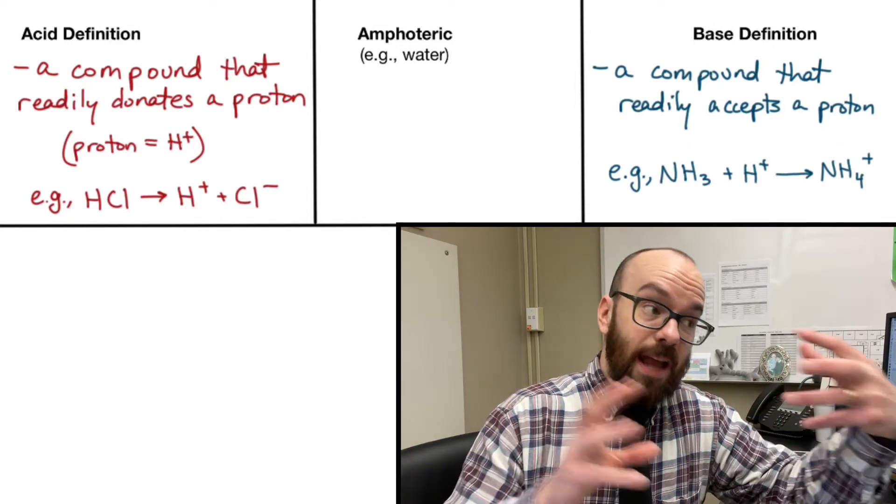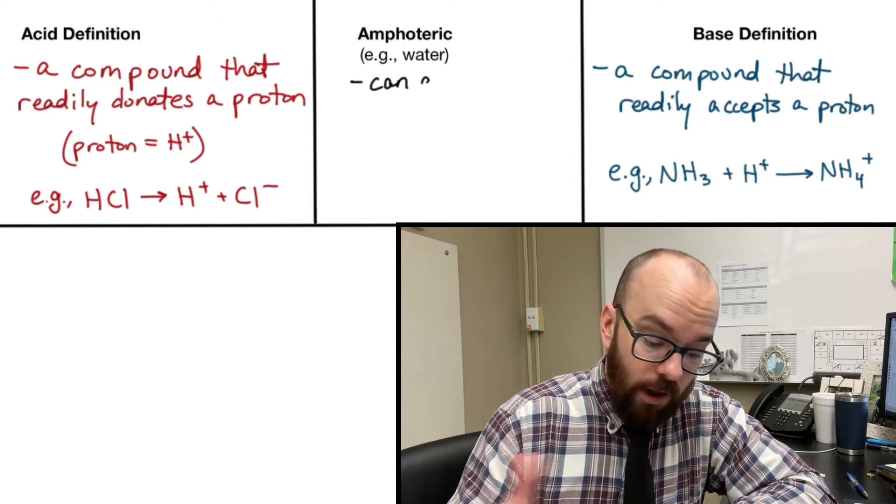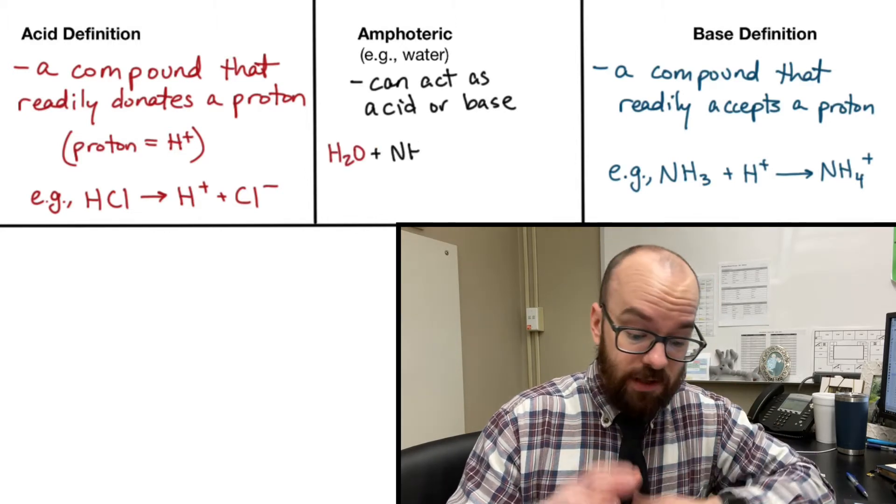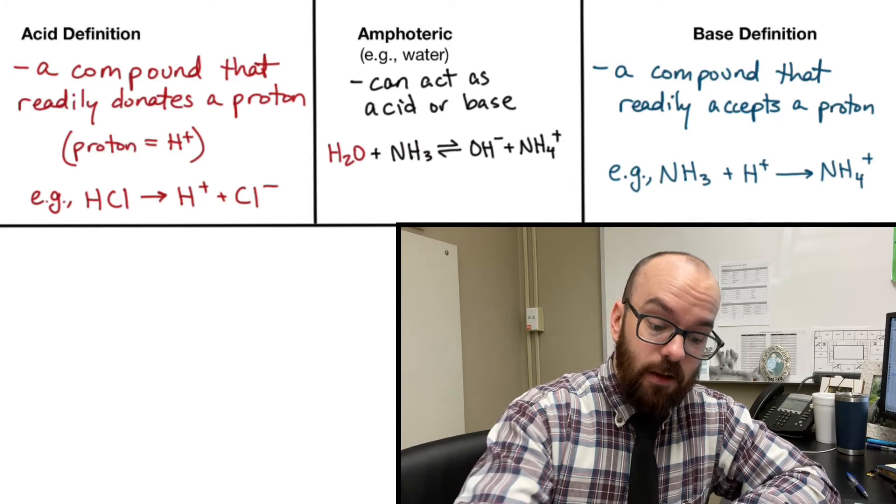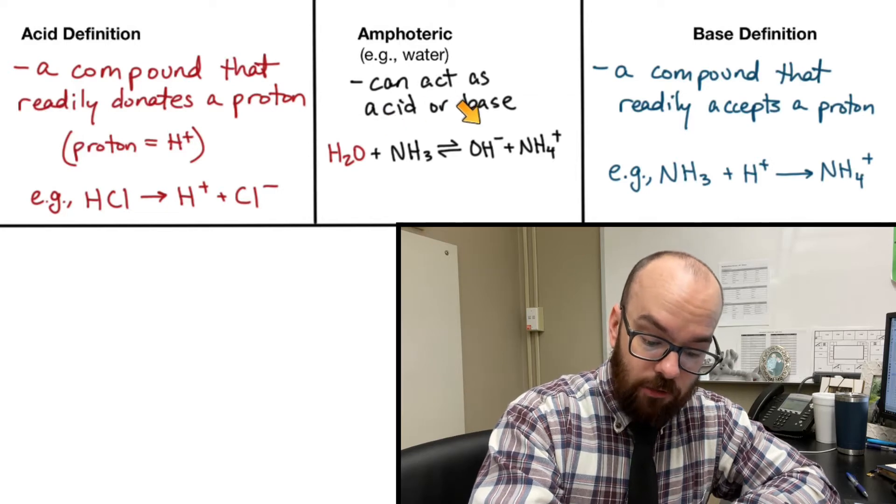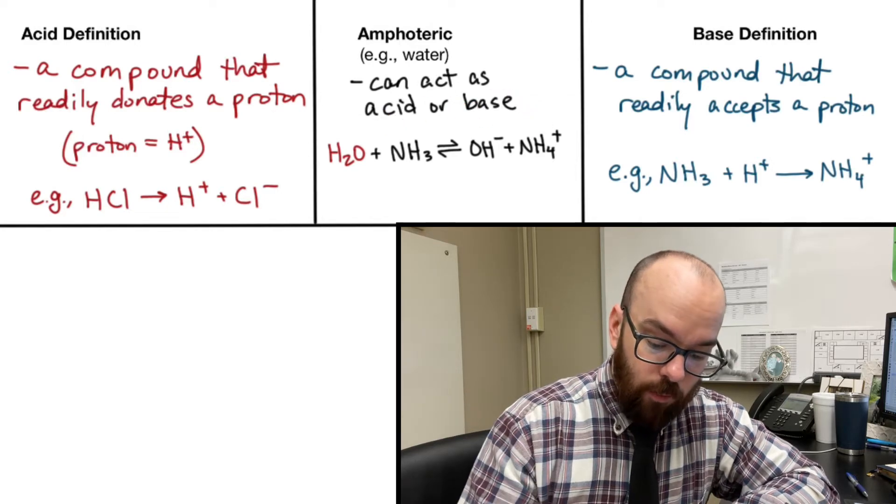Now some molecules can be an acid or a base, and the most common example of that is water. Water can act as either, so we call that amphoteric. This first reaction is an example of water being an acid. The water is going to donate one of its hydrogens to the NH3, and then become hydroxide and NH4+.